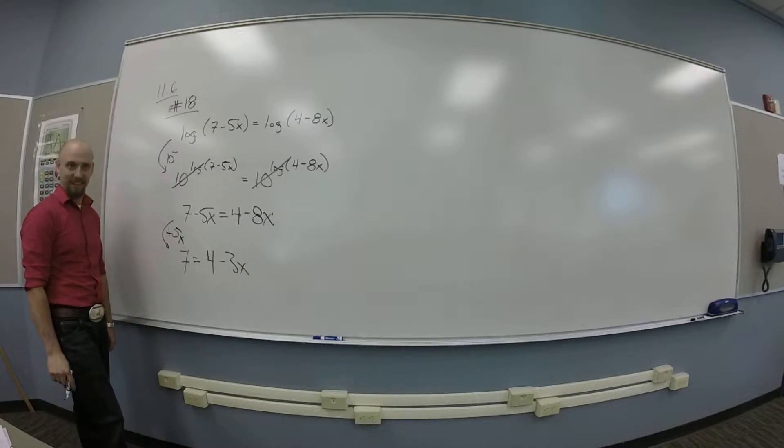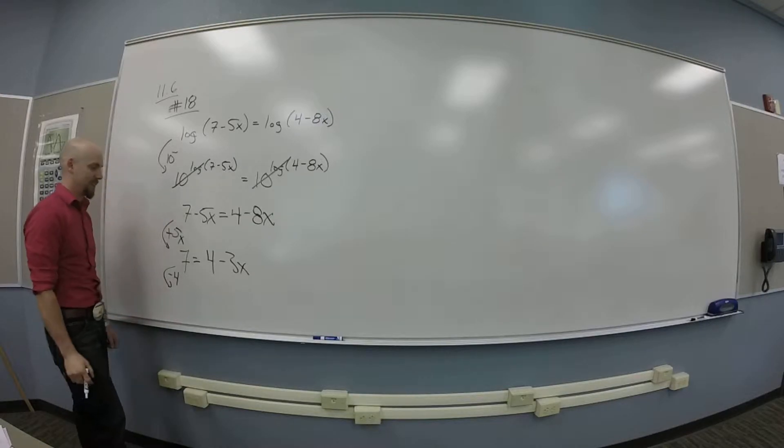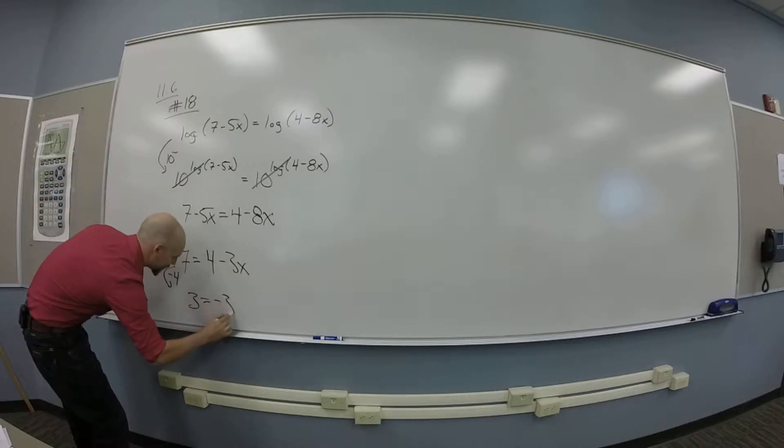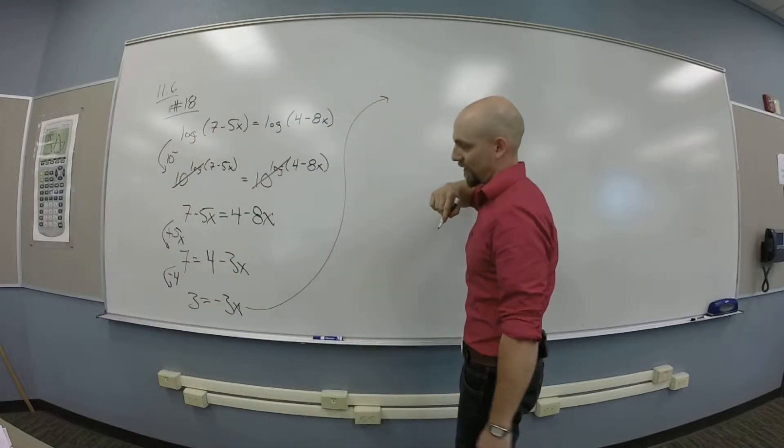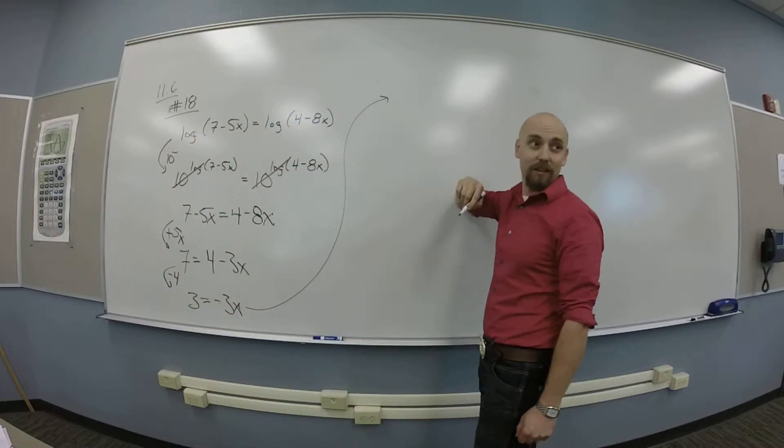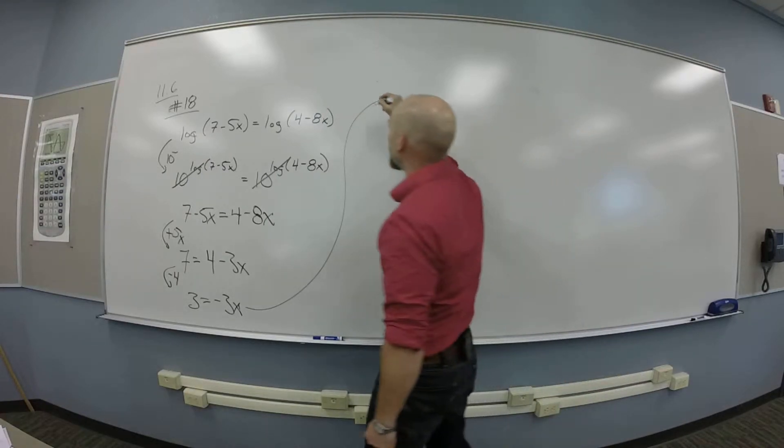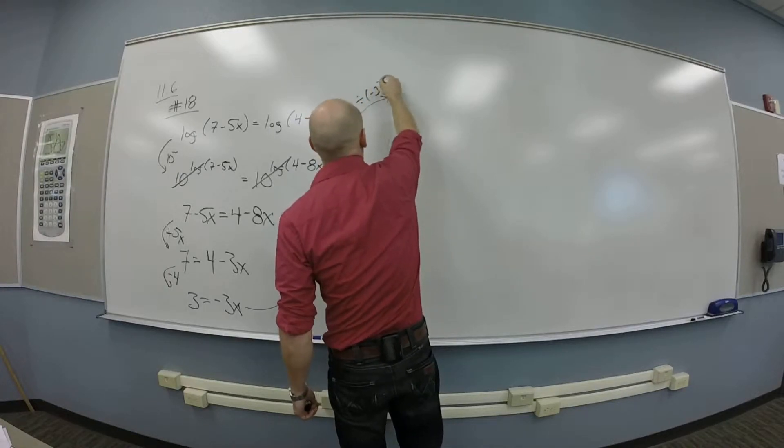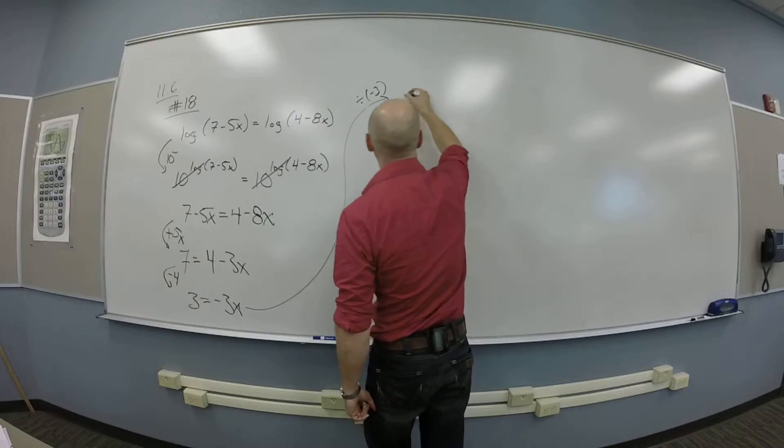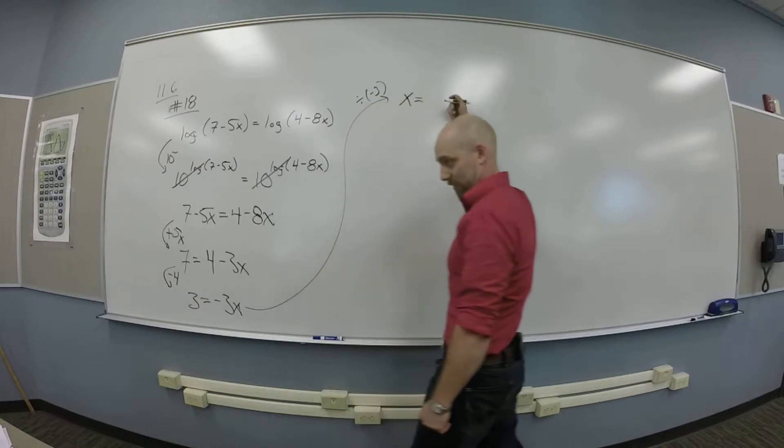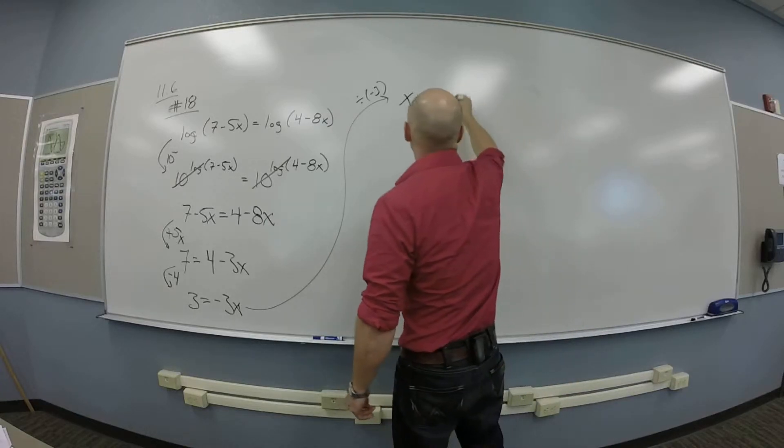Subtract 4. So I subtract the 4, so I get 3 is negative 3x. So then I get rid of the 3, how? Divide by negative 3, or multiply by negative 1 third, right, and get x is negative 1.